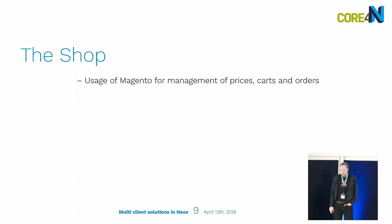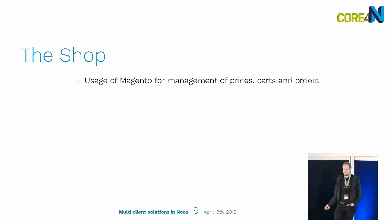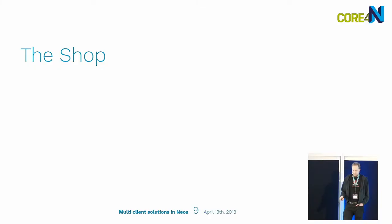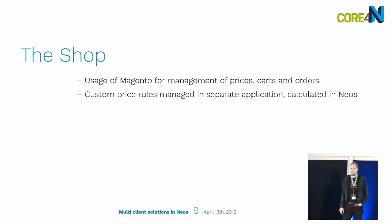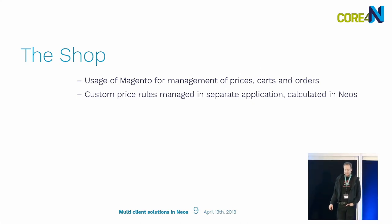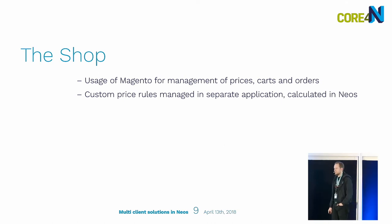One important detail: we used Magento for management of prices, carts, and orders, which was lazily bootstrapped in the backend whenever necessary, but that became more and more seldom. There were custom price rules managed in a separate application, because all those partners are independent companies and cannot have the same prices everywhere. We moved to calculating prices in Neos itself, reducing calculation time from nine hours down to somewhere below ten seconds.